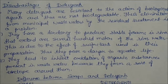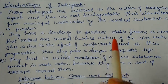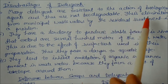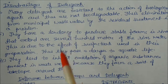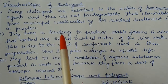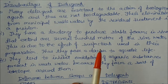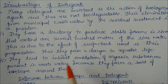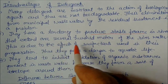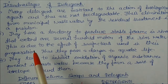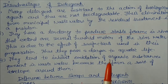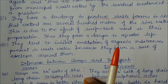Disadvantages of detergents: many detergents are resistant to biological agents and are not biodegradable. Their elimination from municipal wastewater by treatment is a major problem. They have a tendency to produce stable foams in rivers, which can extend over several hundred meters of river water. This is due to the effects of the surfactants used in their preparation, and they pose a danger to aquatic life.